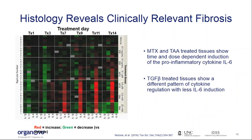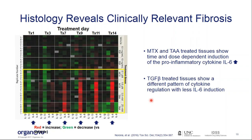Leah's publication also characterized the pattern of cytokines generated from these treatments. Looking at the pro-inflammatory cytokine IL-6, we see an increase over time out to day 14 with MTX and TAA treatments, and within some treatments, evidence of a dose dependence — more IL-6 from the higher dose. That is in contrast to TGF-beta activation, where we're more directly stimulating stellate cell activation from a slightly different pathway, and we just don't see quite as much IL-6, though there is some degree of upregulation over time.